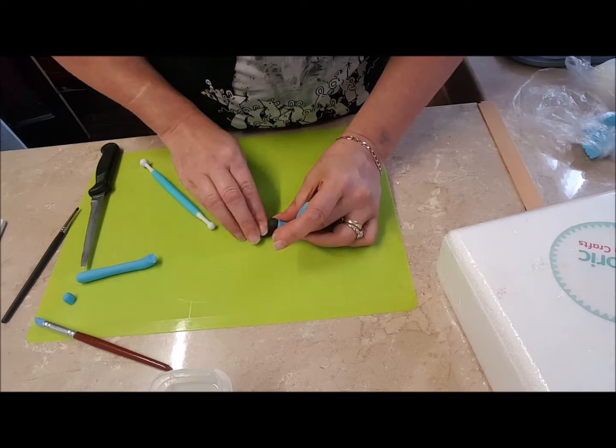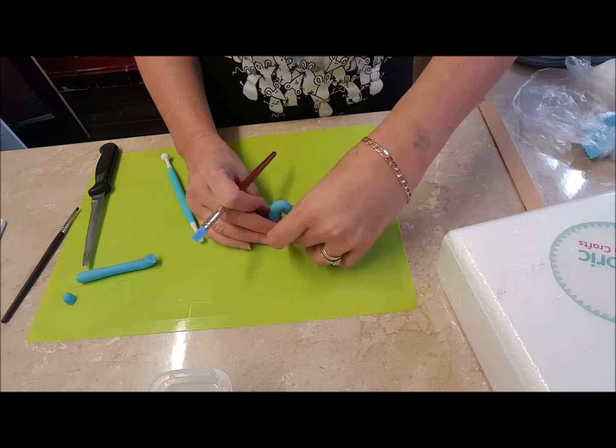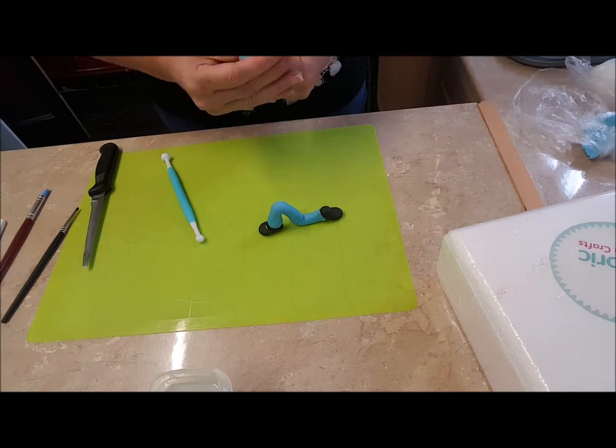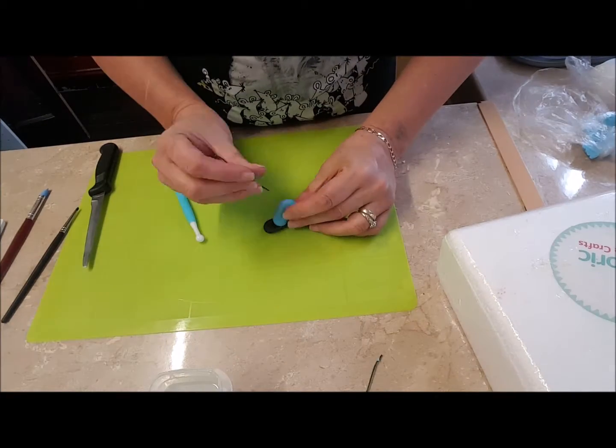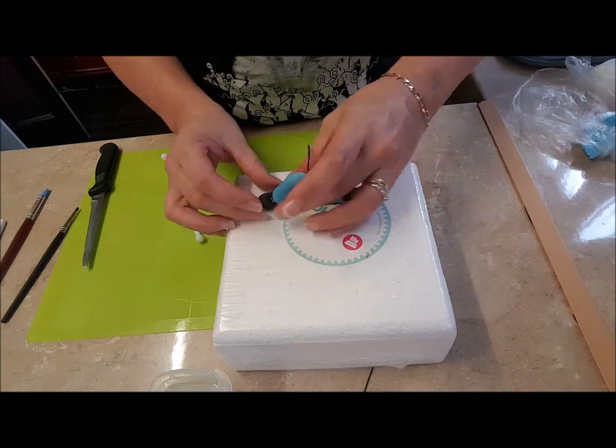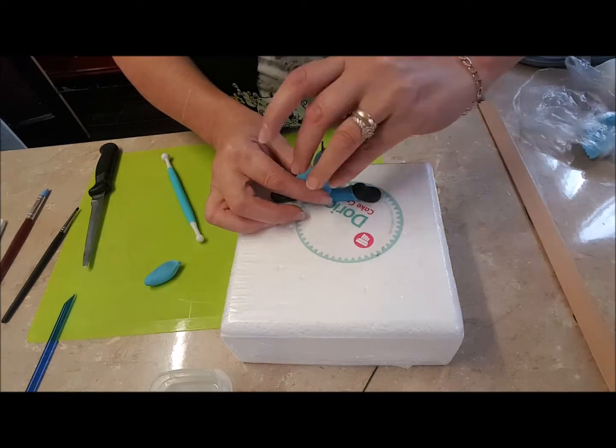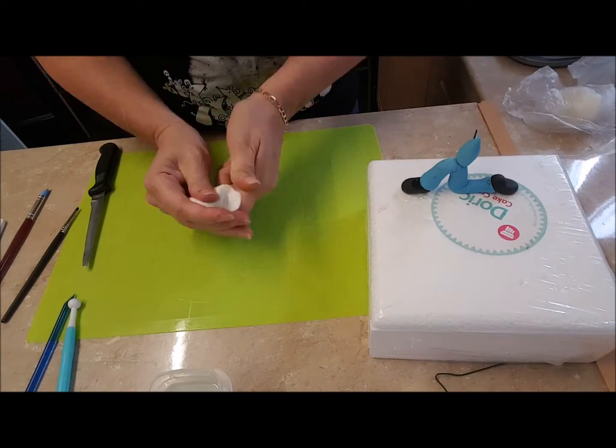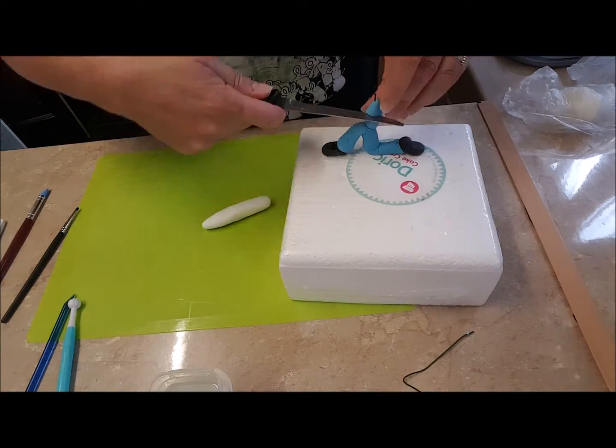And this one goes on backwards so his heel is pointing outwards, add your little creases in there. And here I've put a little stake in just to add the body onto the legs. Now I'm doing his top.